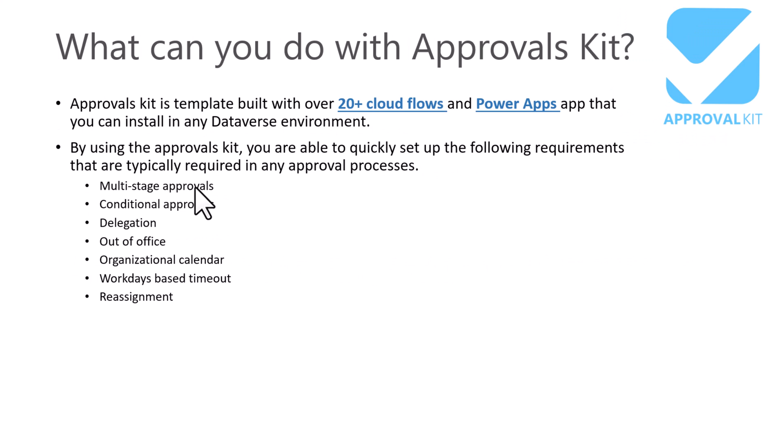This approval kit comes with 20-plus cloud flows and one Power App that is installed in any Dataverse environment. By using this approval kit you will be able to quickly set up requirements like multi-stage approval processes, conditional approval, and delegation — meaning if some person is not available another person can take their place and approve the request. You can also handle out-of-office scenarios where the approval is sent to a different delegated person. You can maintain an organization calendar, workday-based timeout and reassignment as well. If an approval doesn't respond within a certain number of business days, you can handle all of those scenarios out of the box — whereas with the standard approval action you would need to build significant custom logic.